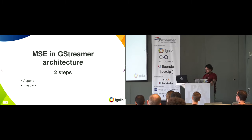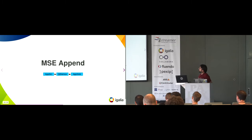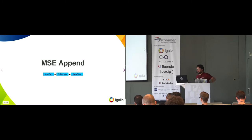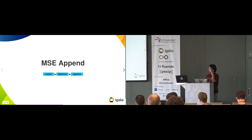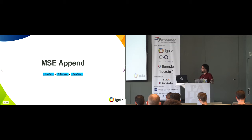The MSE append is quite straightforward. We have an AppSource, then a demuxer — usually ISOBMFF or Matroska demux for WebM — and then the AppSink. The demuxer does its job. Sometimes we also have a parser depending on the content: if it's encrypted, we don't have the parser; if it's not encrypted, then usually we have the parser there.